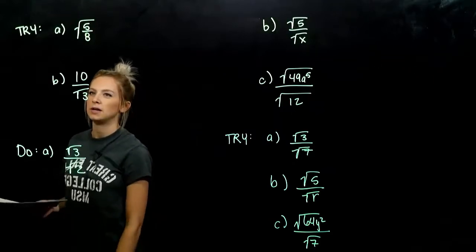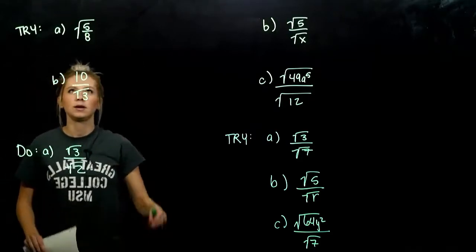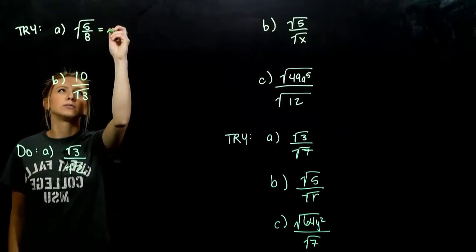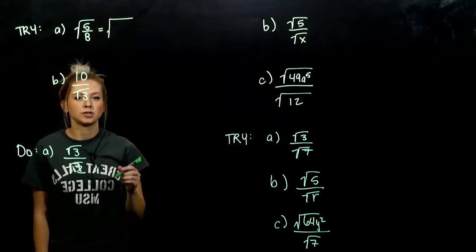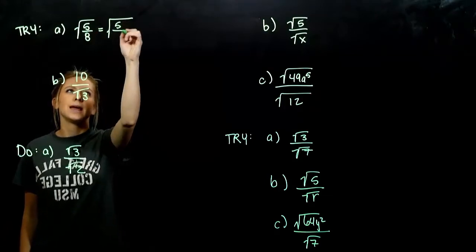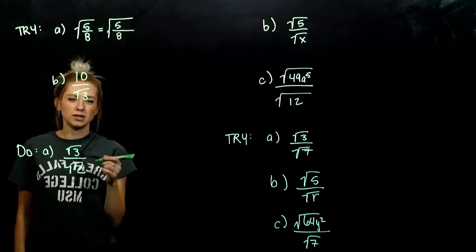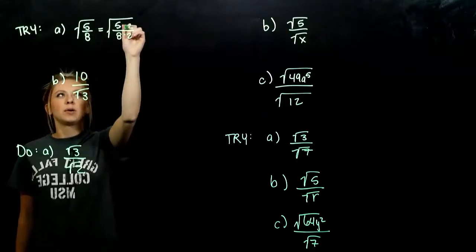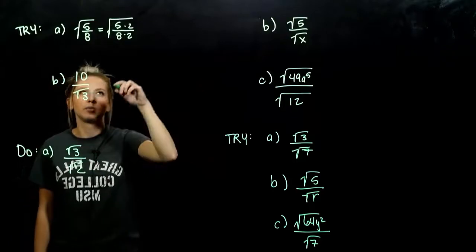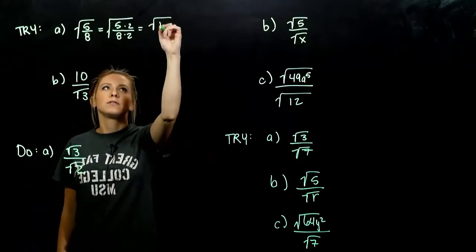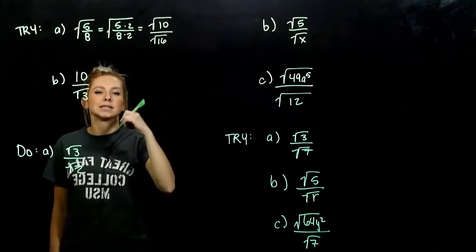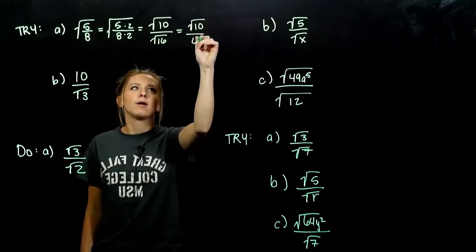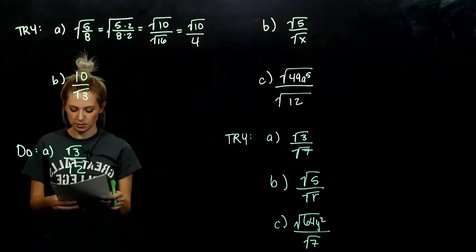For the next set, part A: I've got a big radical on the outside of everything, so I should work on the inside of that radical, multiplying by a factor of 1. To turn 8 into a perfect square, what do we need to multiply by? A factor of 2. Whatever I do to the bottom, I have to do to the top. So I'm looking at the square root of 10 all over the square root of 16, which evaluates out to root 10 over 4 — simplified as far as we can go.